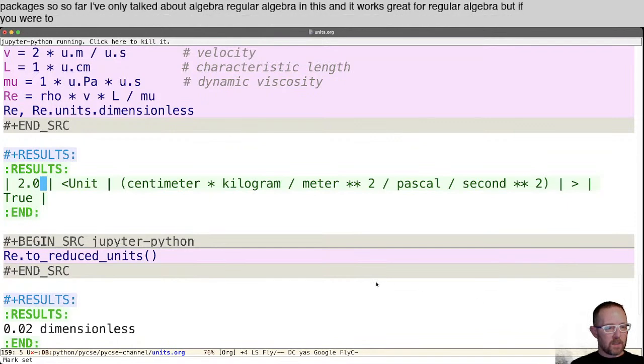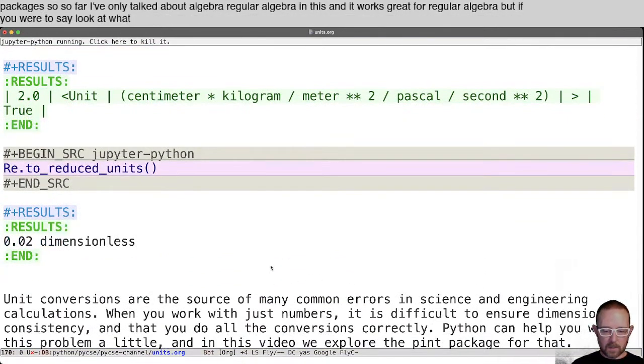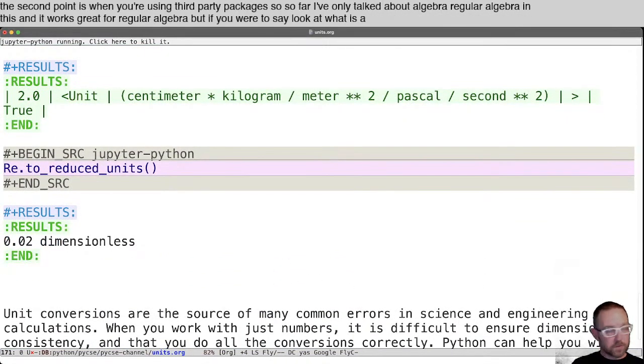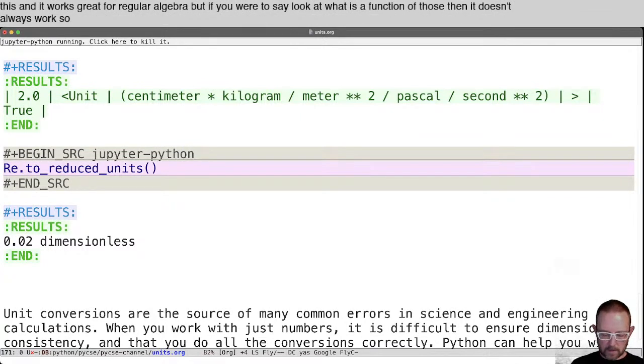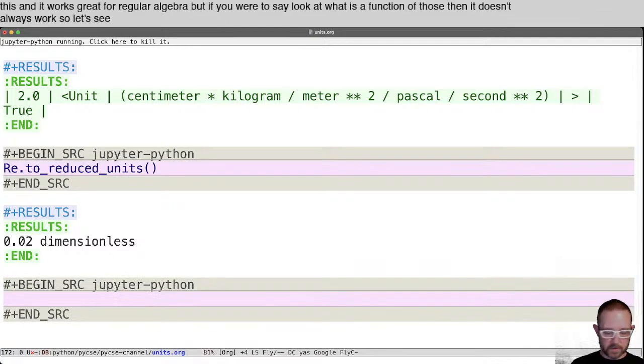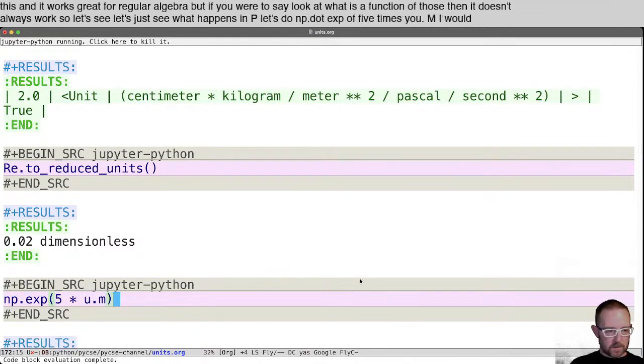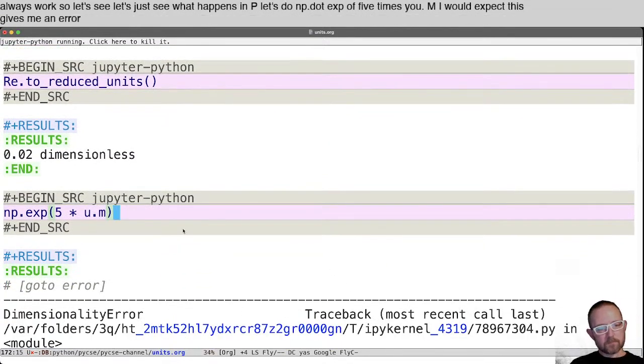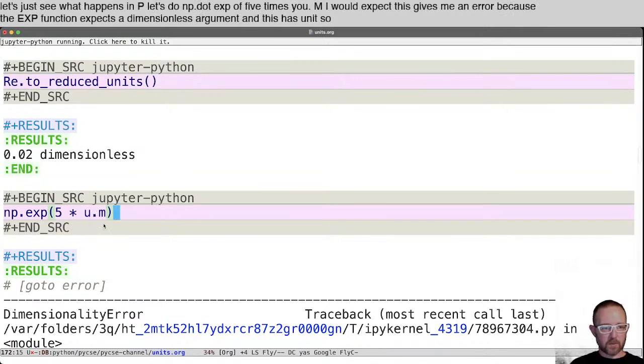But if you were to look at what is a function of those, then it doesn't always work. So let's see. Let's just see what happens. NP. Let's do NP dot exp of five times U dot meters. I would expect this gives me an error because the exp function expects a dimensionless argument and this has units. So it's not okay.